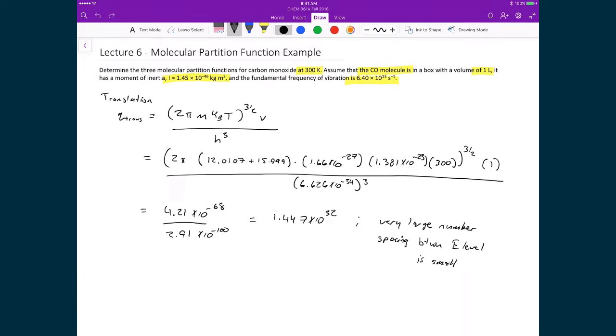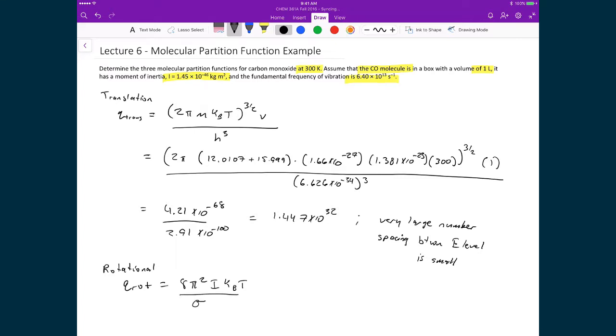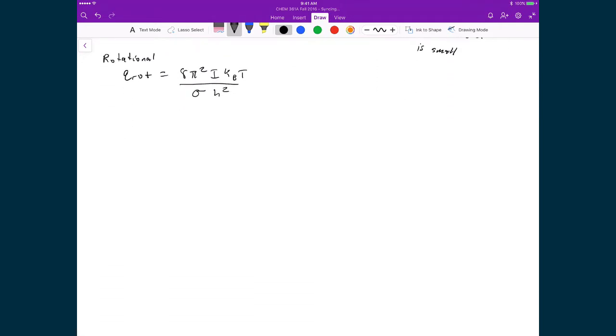Let's now move on and calculate the rotational partition function. So qrot is going to be equal to 8π² times the moment of inertia I times Boltzmann's constant times the temperature, divided by σ times Planck's constant squared. When I substitute in numbers, we get 8π² times the moment of inertia which was given in the problem, 1.45 times 10 to the minus 46, times 1.381 times 10 to the minus 23, times 300, divided by 1 times 6.626 times 10 to the minus 34 squared.